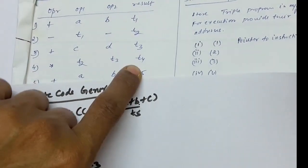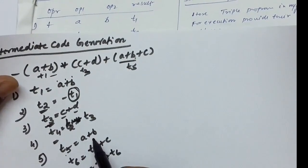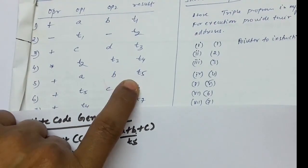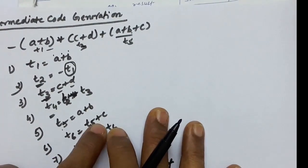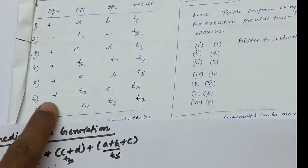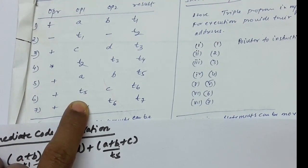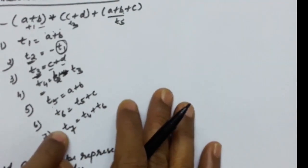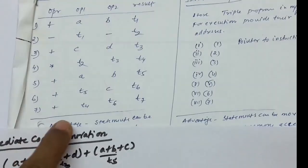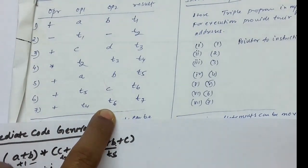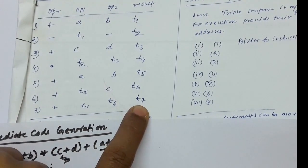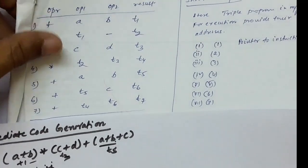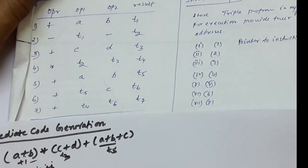For t5 equals a plus b: operation plus, operands a and b, result t5. For t6 equals t5 plus c: operation plus, operands t5 and c, result t6. Finally, t7 equals t4 plus t6: operation plus, operands t4 and t6, result t7. This is the quadruple representation. We will see its advantages and disadvantages shortly.